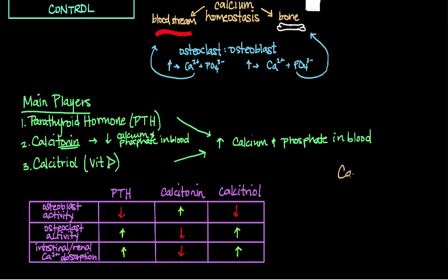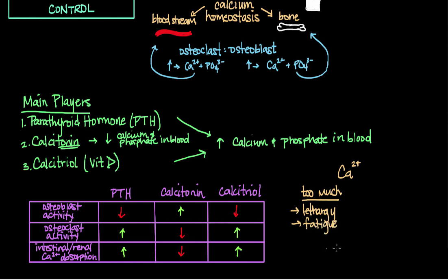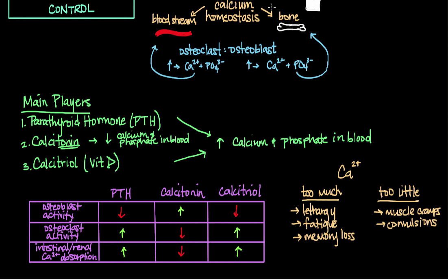Why does the concentration of free calcium ions in the blood matter so much? Why does the body have this elaborate system of calcium homeostasis? The concentration of calcium ions in the blood has very important physiological effects. Too much calcium leads to hypo-excitable cell membranes, resulting in lethargy, fatigue, and memory loss, whereas too little calcium leads to muscle cramps and convulsions. The endocrine system plays a critical role in calcium homeostasis through its effect on bone remodeling and calcium absorption.